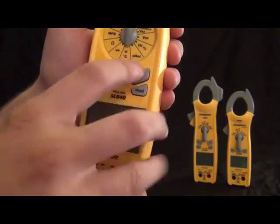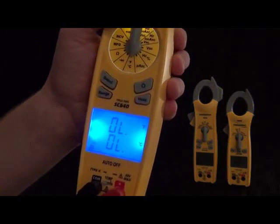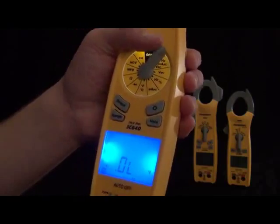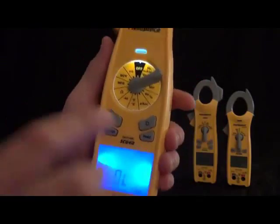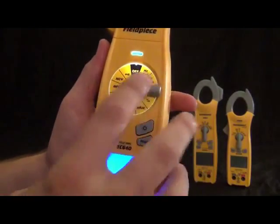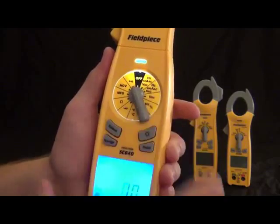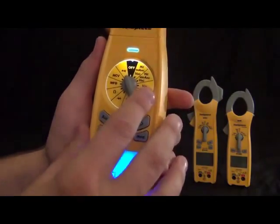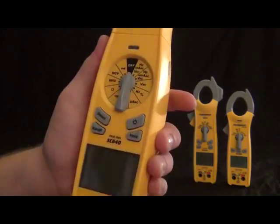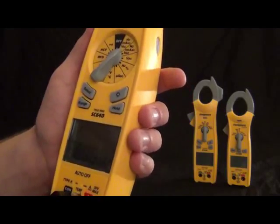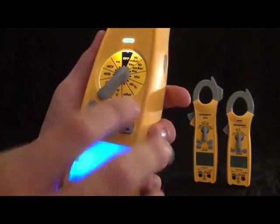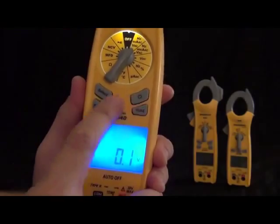Alright, now let's take a look at the buttons. We got your backlit button, your select button. This will just toggle through the ranges. So for example, amps, hertz, or amps, back. Depending on which switch position, that select will toggle through the various things that switch position can measure.